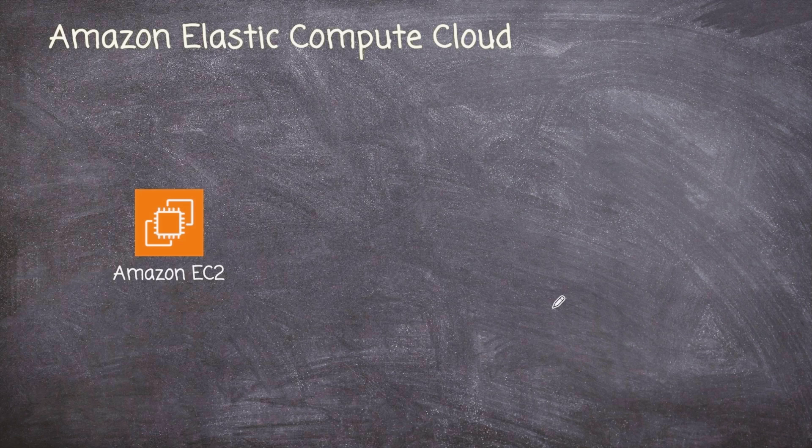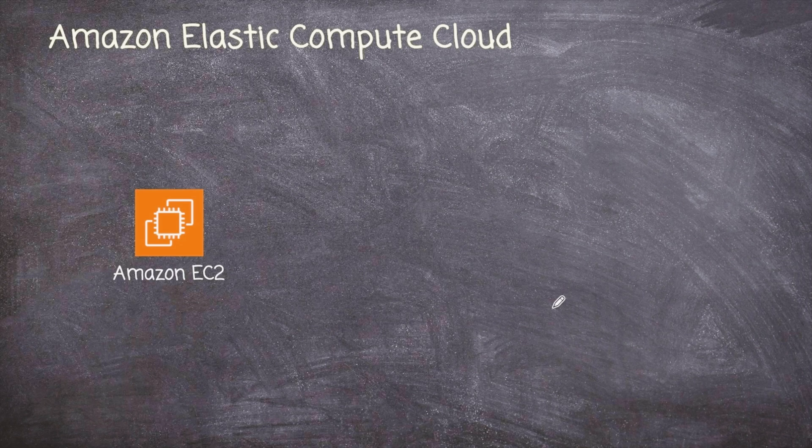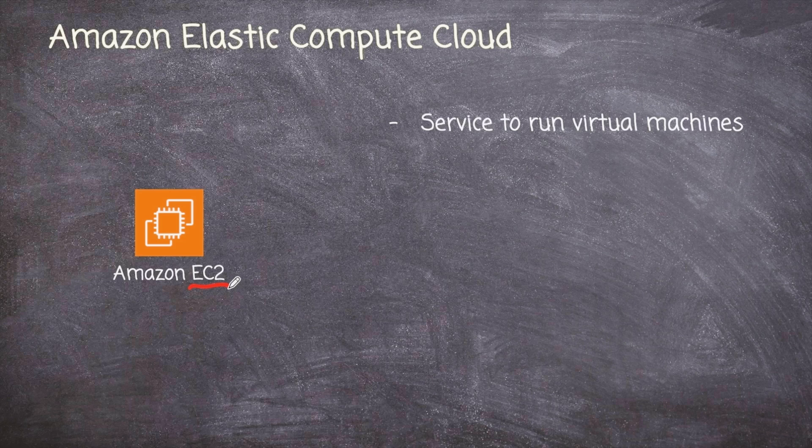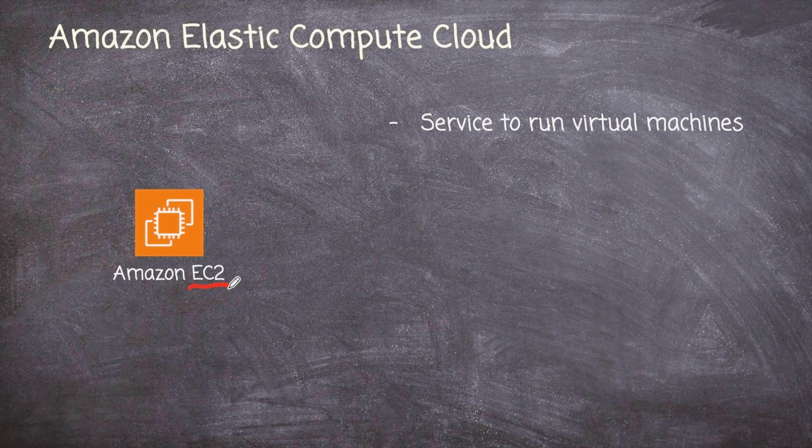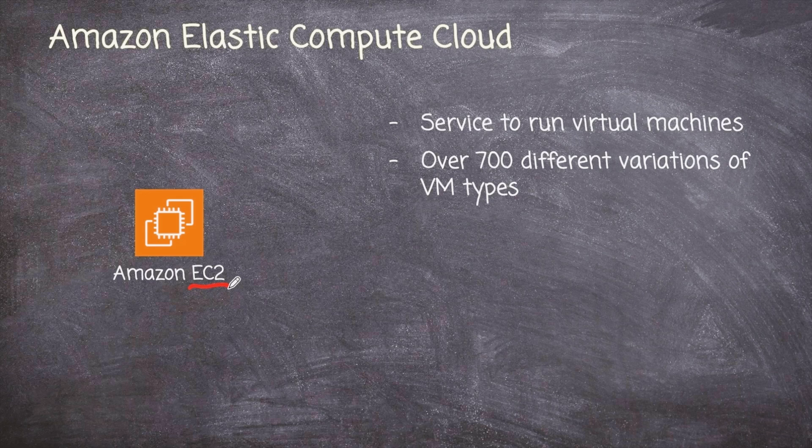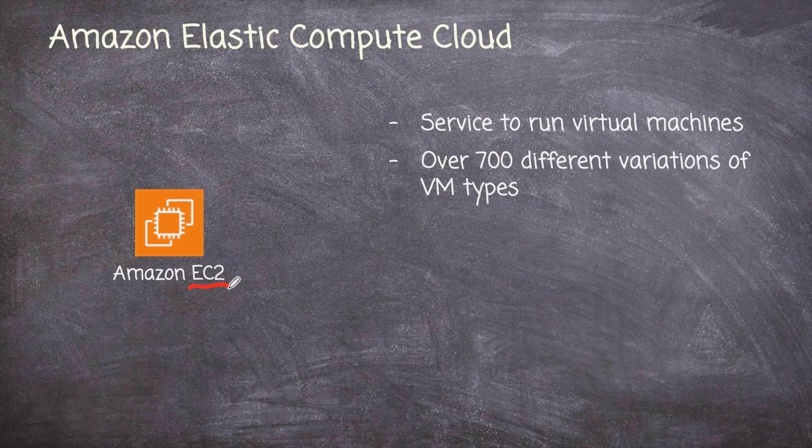But first, we're going to talk about probably the most prolific AWS service, that being Elastic Cloud Compute, or we just abbreviate it and say EC2. Now, EC2 is the service that AWS has created to do nothing but run virtual machines, and it does that very well. Now, typically, when you set up a virtual machine, you have to specify how much RAM and how much CPU and that sort of thing you're going to allocate to that virtual machine. Well, AWS has over 700 different variations of VM types that we can use.